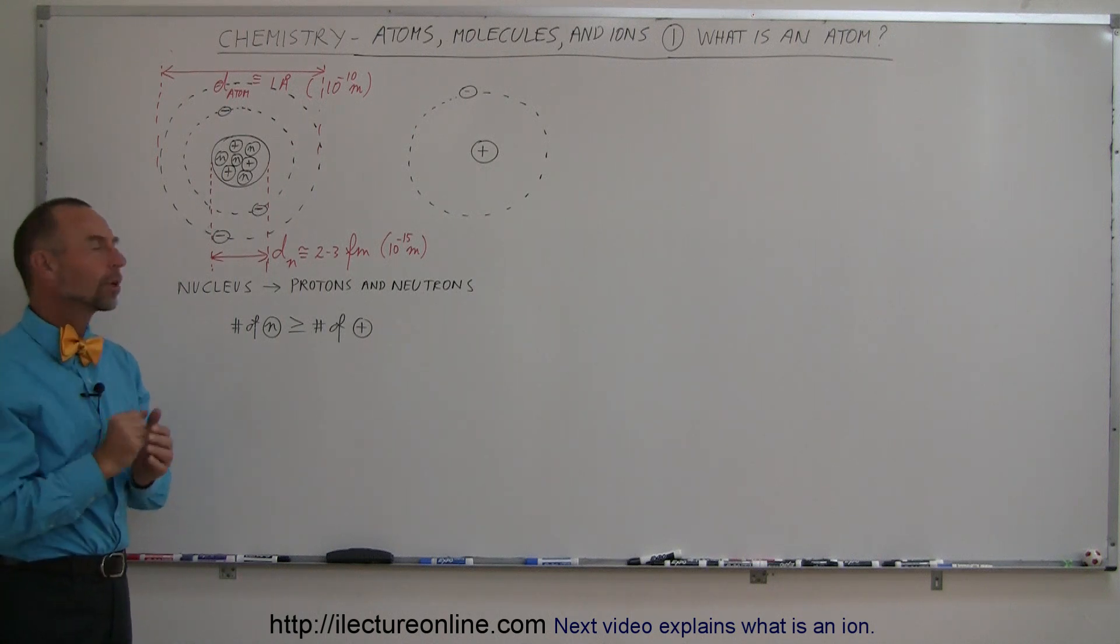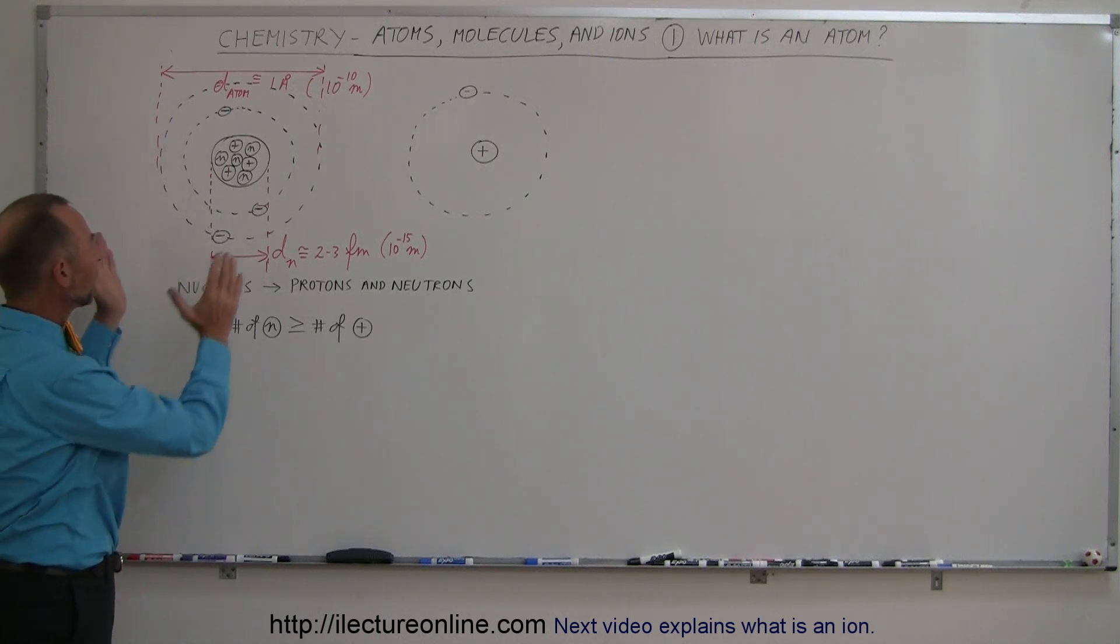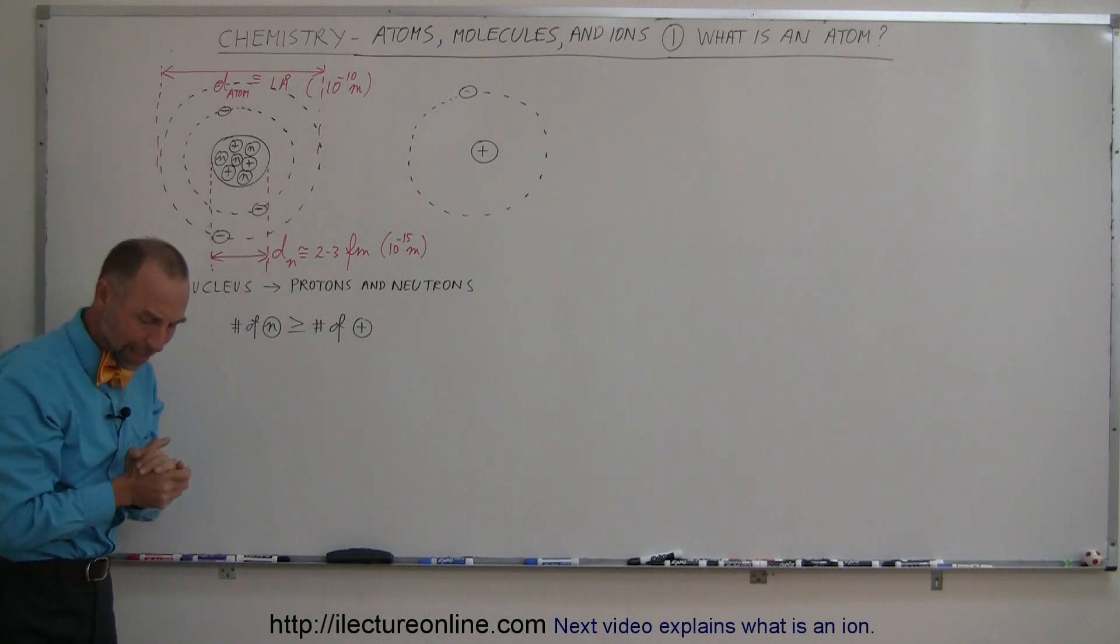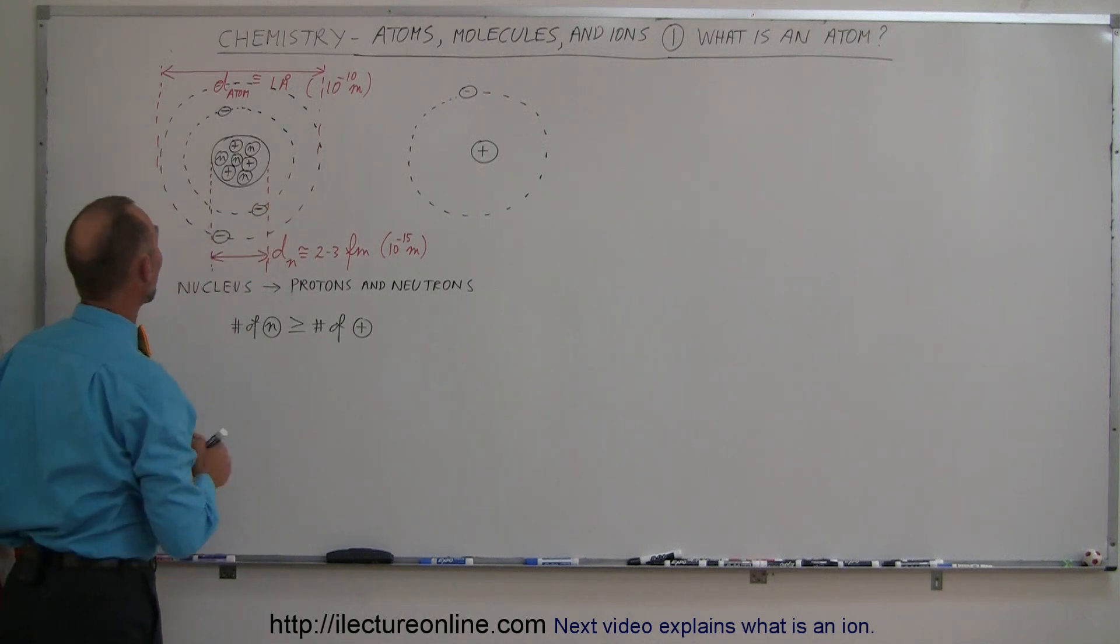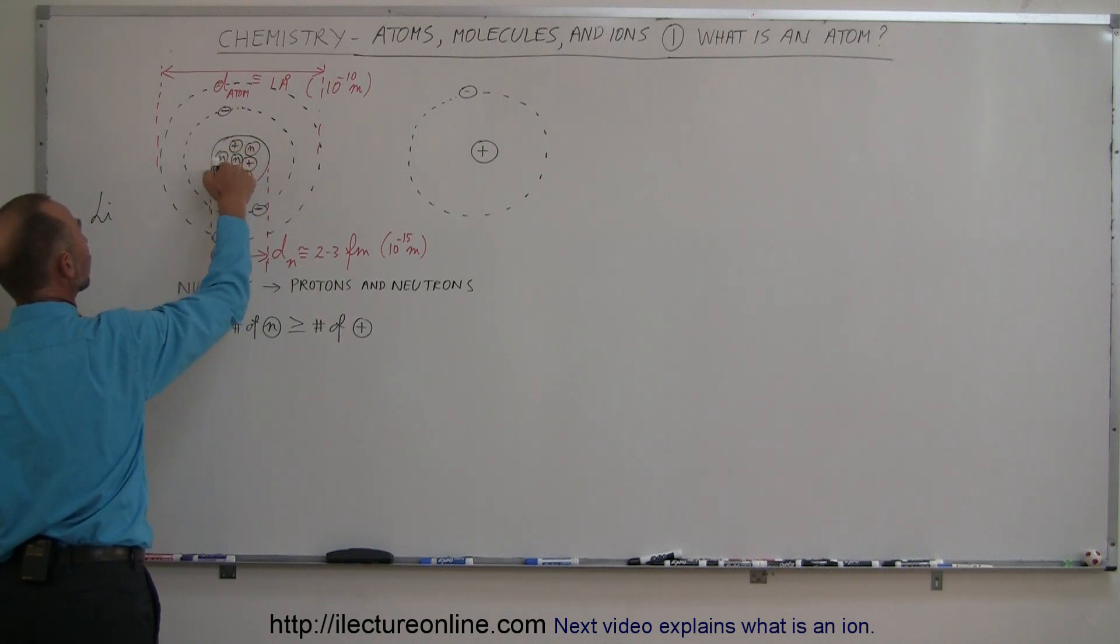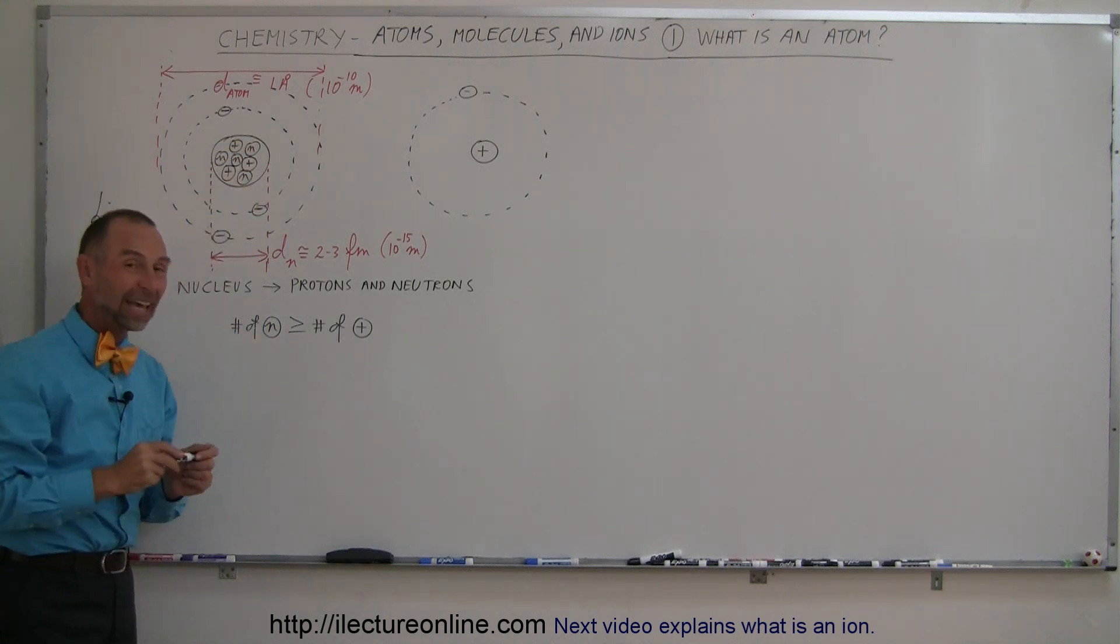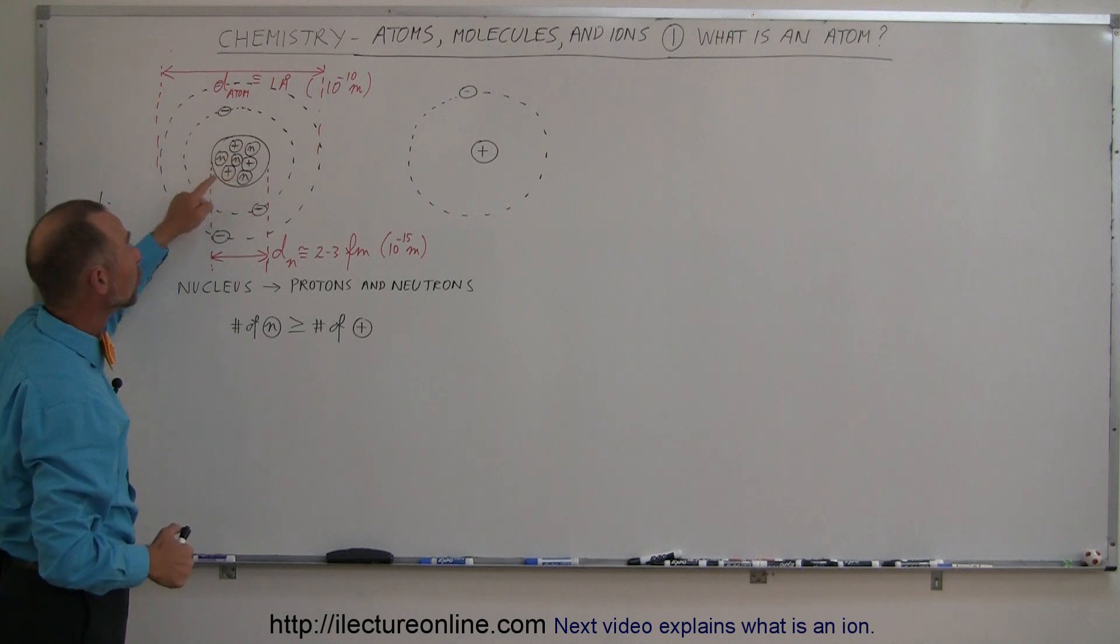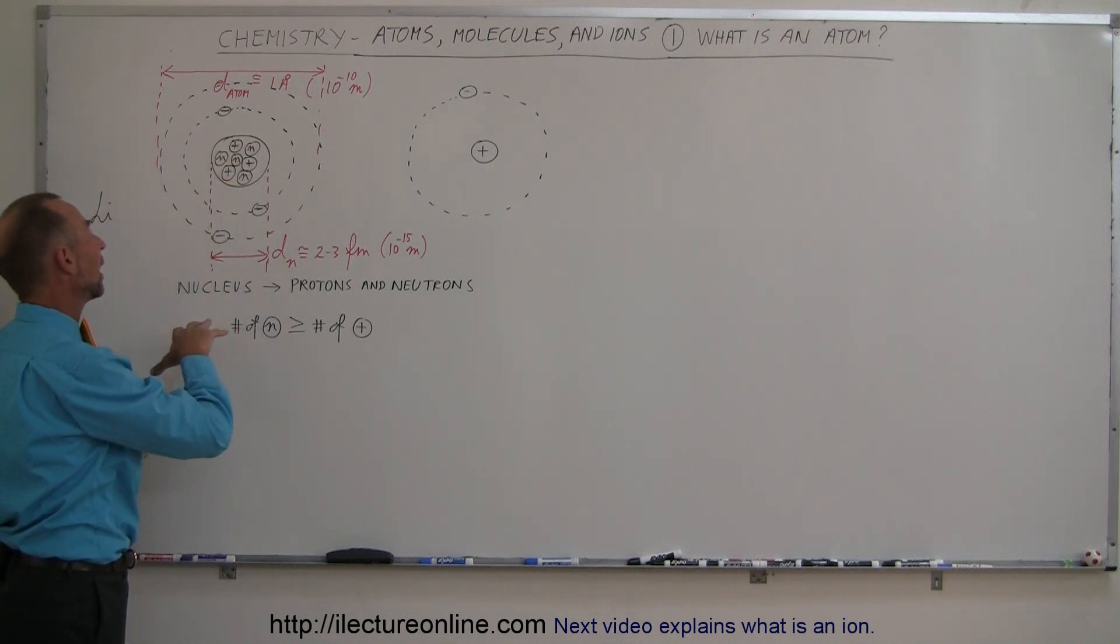But let's take a closer look at this. This particular example right here is really a lithium atom. The reason why I know it's lithium is because it has three protons. One, two, three protons in the nucleus, and it also happens to have four neutrons. Most lithium atoms have three protons and four neutrons.